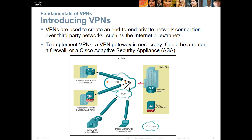So what is the purpose of a VPN? Essentially, a VPN is used to create end-to-end private network connections over a third-party network — an end-to-end connection through the internet that allows us to extend corporate or LAN resources through a third-party network. Typically to implement VPNs, you have to have a gateway, which could be a router, a firewall, or another security appliance. You need a point A and a point B.